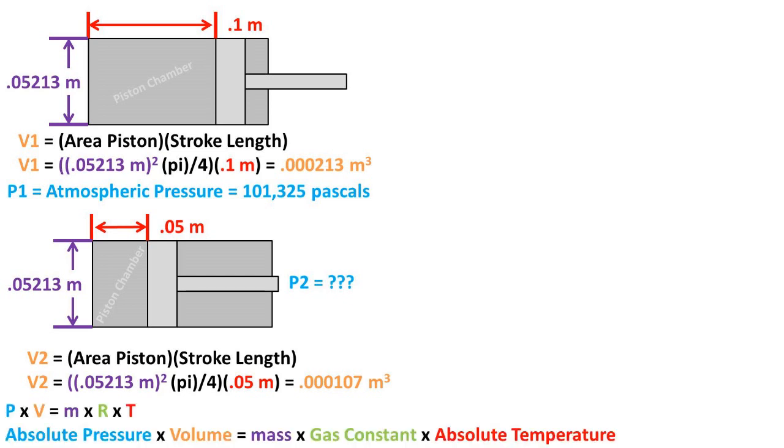Now we will need to use the ideal gas law, which is absolute pressure times volume equals mass times the gas constant times the absolute temperature. Or in other words, PV equals MRT.